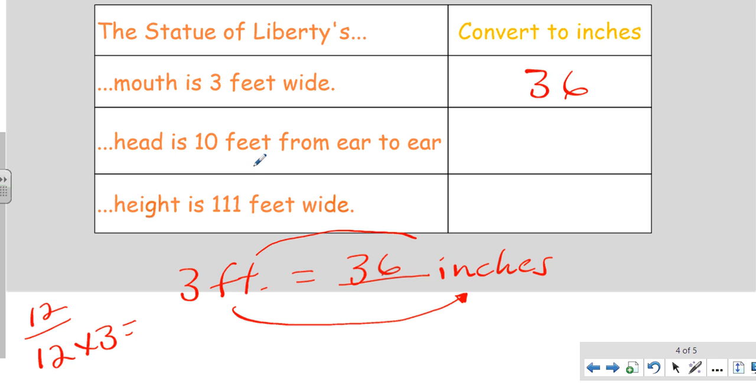The head is 10 feet from ear to ear. Same thing: we take our 10 feet, we have so many inches. We're going to multiply this by 12. There's 12 inches in one foot. 12 times 10 feet is 120.